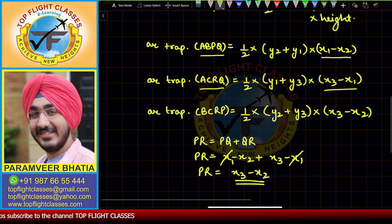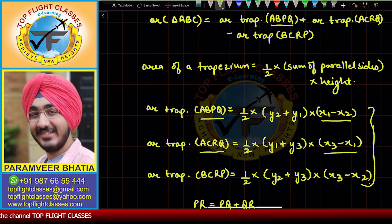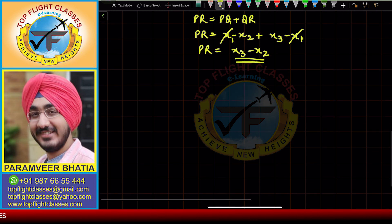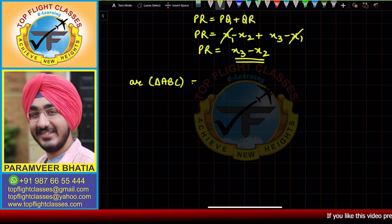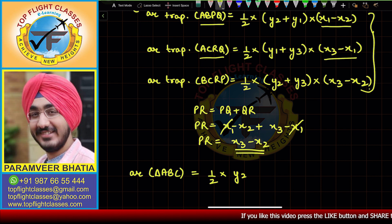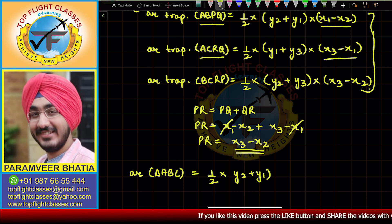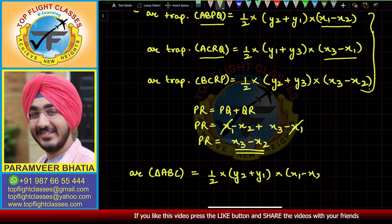Now we have the three trapezium area values. We put them into the equation: area of triangle ABC equals half times (y2 + y1)(x1 − x2) plus half times (y1 + y3)(x3 − x1) minus half times (y2 + y3)(x3 − x2).